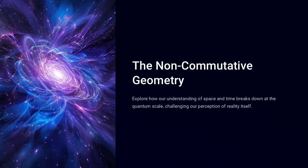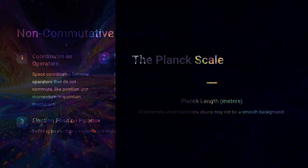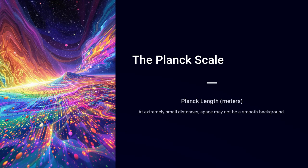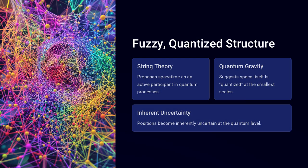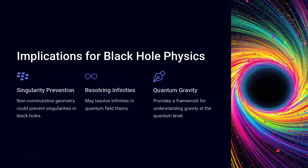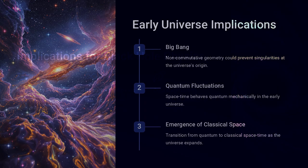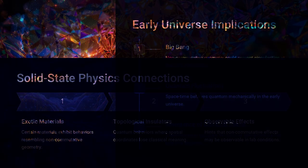In classical physics, we take for granted that space has fixed, well-defined coordinates. If you measure an object's position in one direction, then in another, the two measurements commute, meaning the order doesn't change the outcome. However, at the quantum scale, this assumption breaks down.